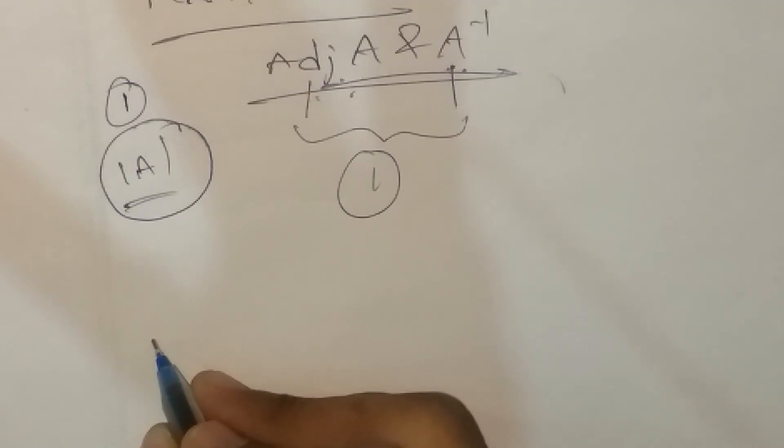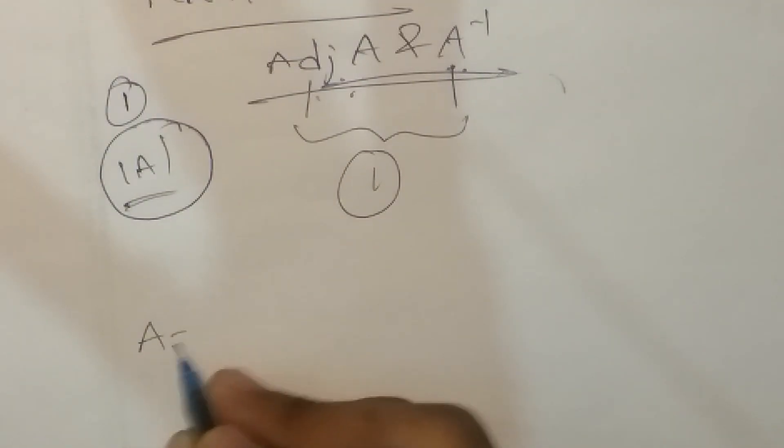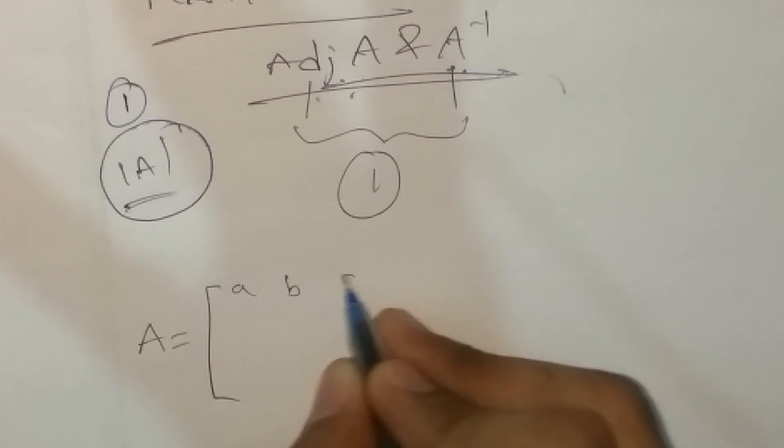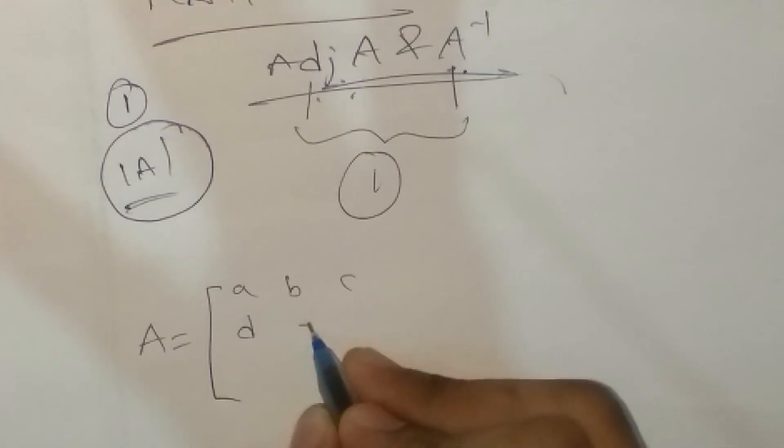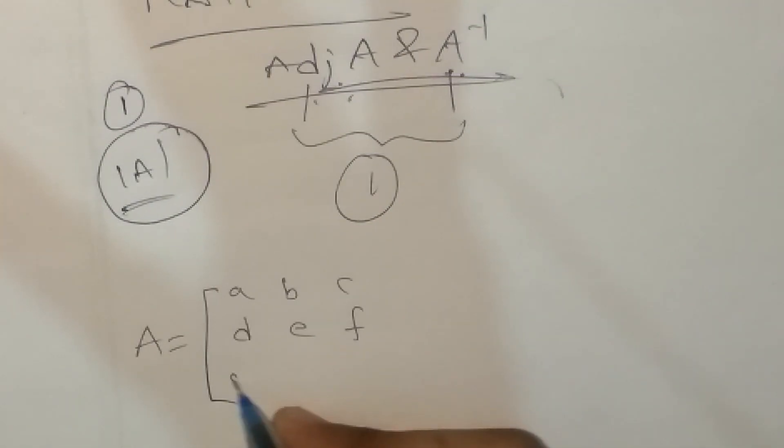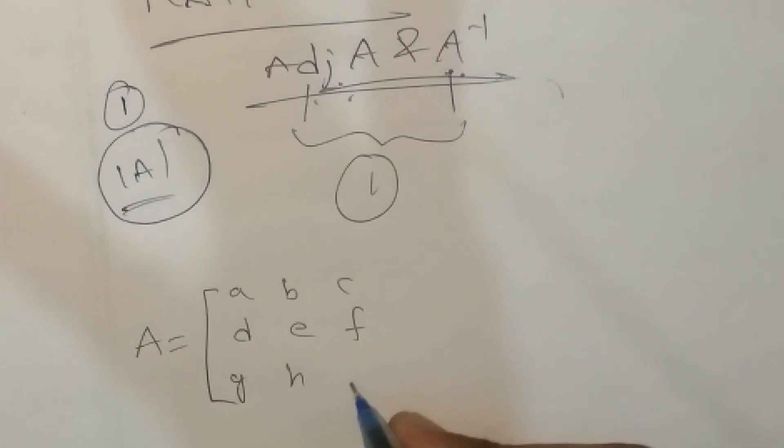So, let us suppose A is equal to a matrix with elements a, b, c, d, e, f, g, h, i — a 3x3 matrix.